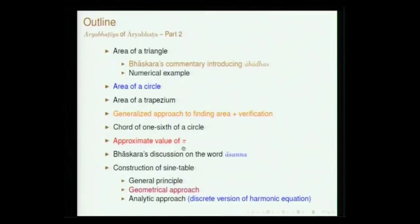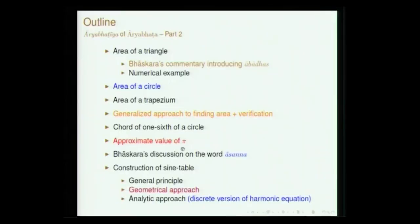This is the second part of our lecture on Aryabhatiya. In the earlier part, we saw the algorithms presented by Aryabhata for extracting square root, cube root, and so on. In this lecture, we will be starting with the formulae given by Aryabhata for finding the area of various geometrical objects — starting with triangle, then proceeding towards trapezium, circle, and so on. In the later part, we will see the approximation given by Aryabhata for the value of pi and the method discussed by him for generating the sine table.